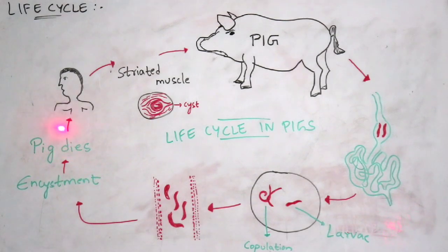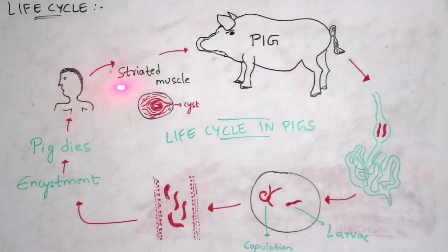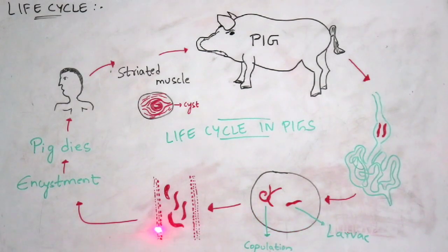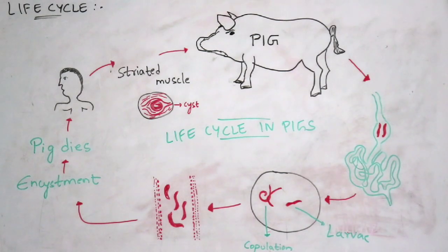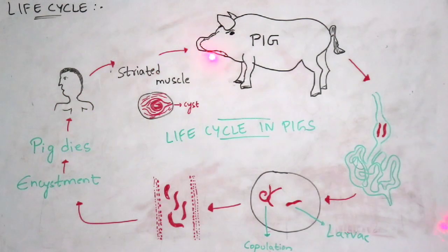When the pig dies, it is consumed by humans, and the human life cycle of Trichinella begins again. The affected striated muscle is again consumed by the pig, and within the pig's small intestine, copulation of male and female worms takes place again. The larvae enter the bloodstream, encystation occurs, and the pig again dies — completing this continuous cycle between humans and pigs.